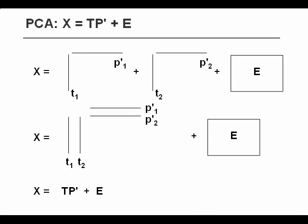So, the first component would be score one and loading one. The second component would be score two and loading two, etc. And then we have the residuals, which will have the same size as our original data.